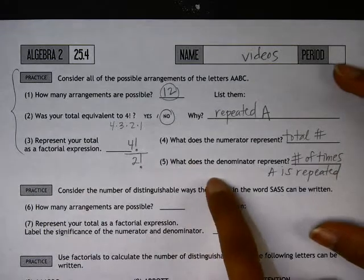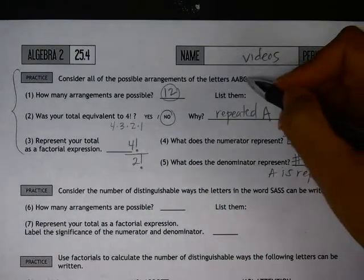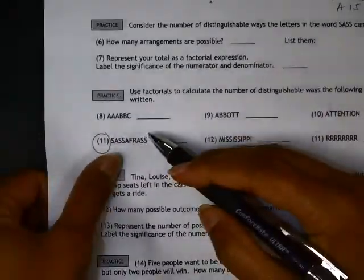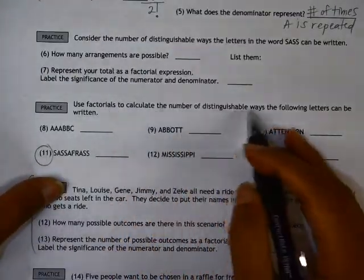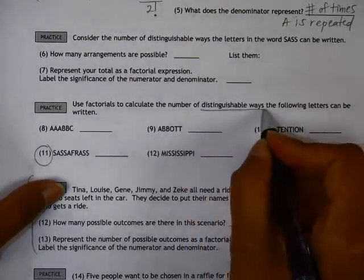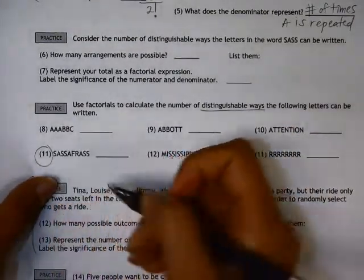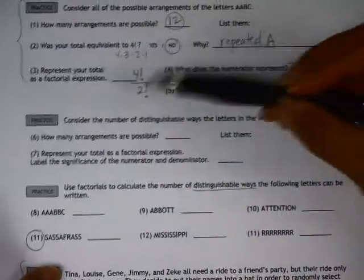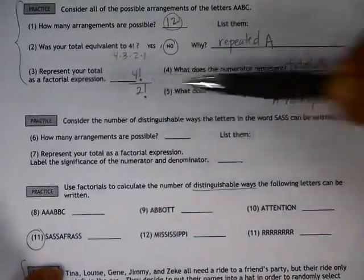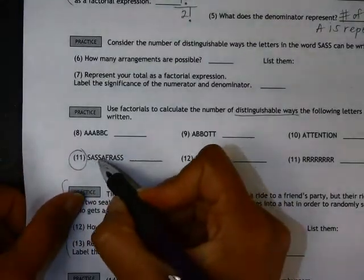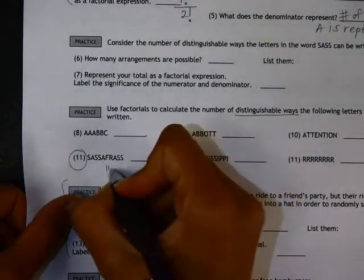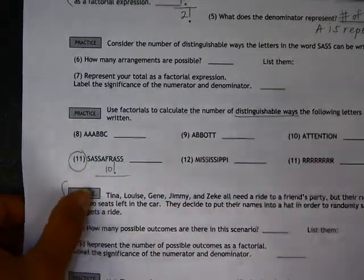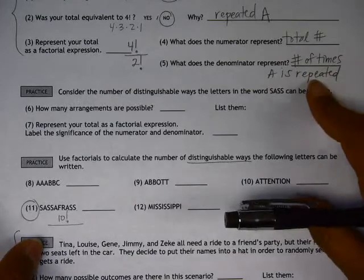So if we look also at an example similar to this, let's go ahead and look at number 11. We're finding, using factorials, calculating the number of distinguishable ways that the letters in the word SASSAFRAS can be arranged. So if we use this format here, the numerator will be the total number of letters, so 1, 2, 3, 4, 5, 6, 7, 8, 9, 10.